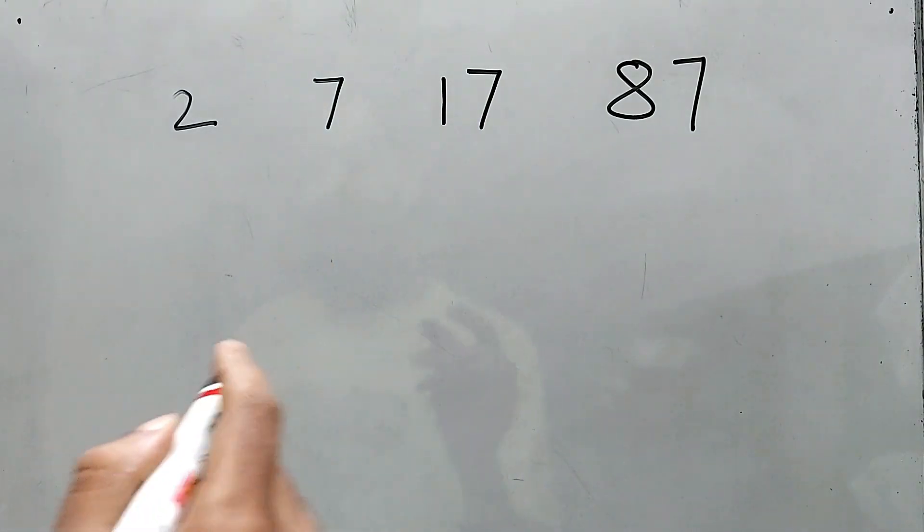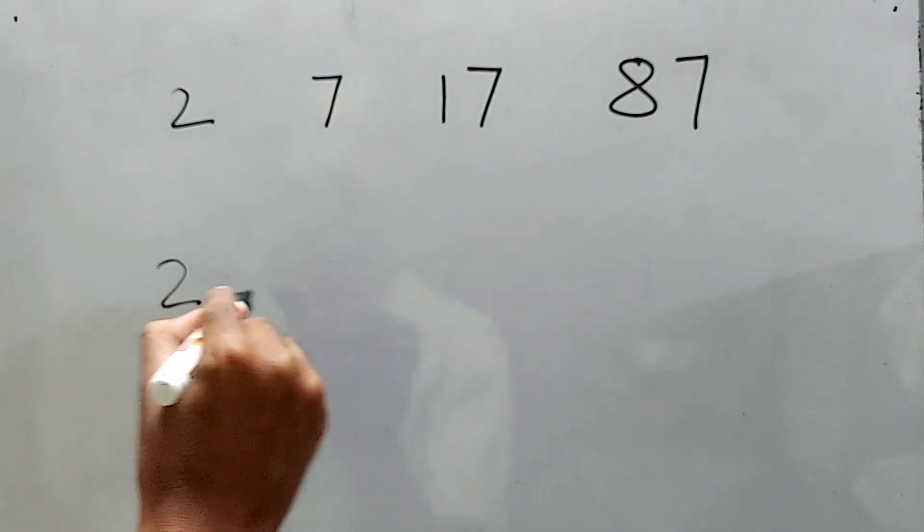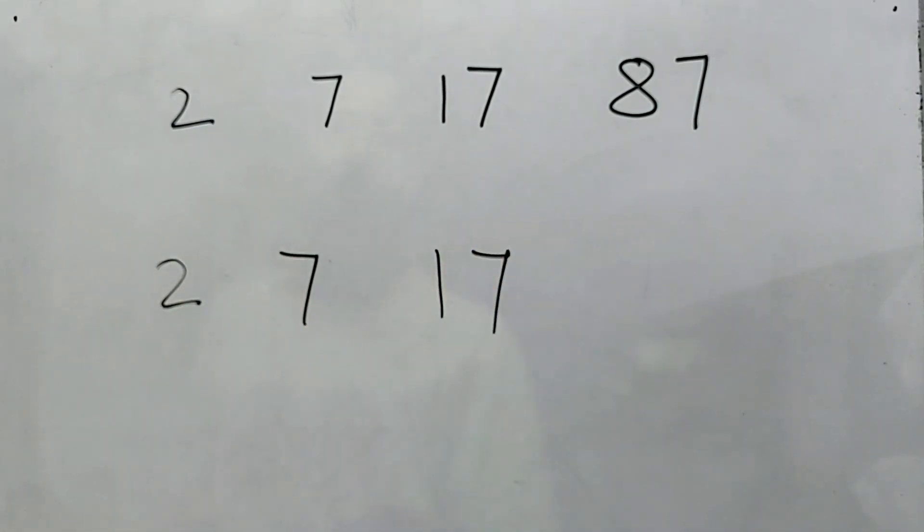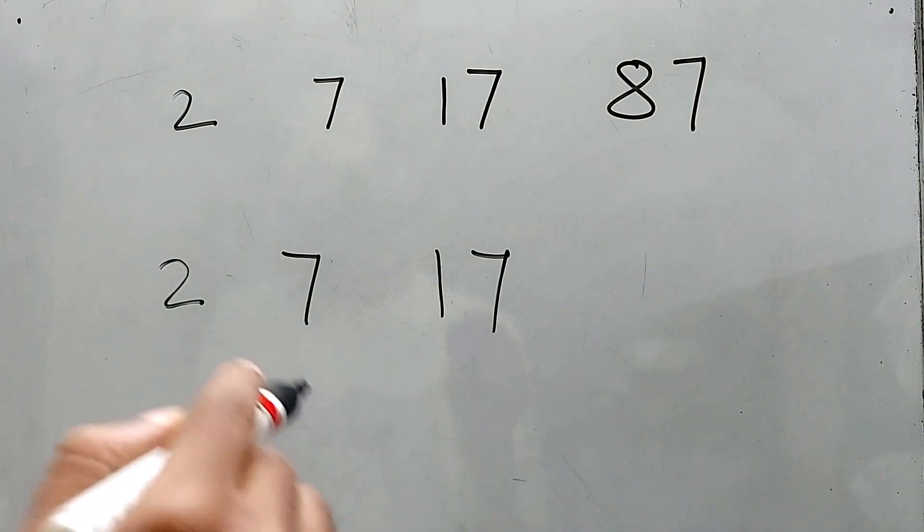But before we start this, I would like to give you an easier one that is the same numbers but smaller: 2, 7, and 17. See, can you solve this? Pause this video here, stop it, try it for some time.